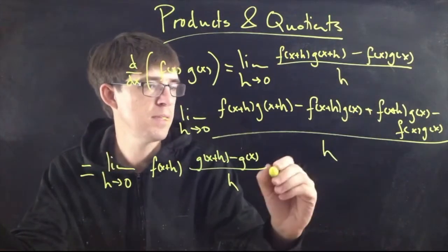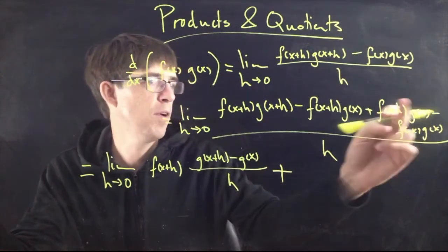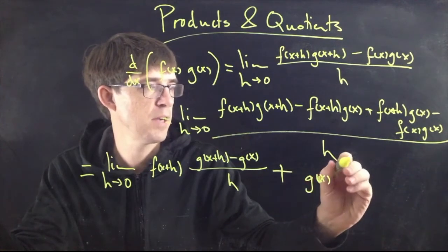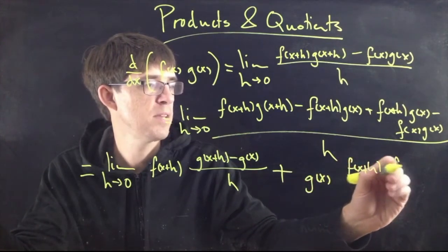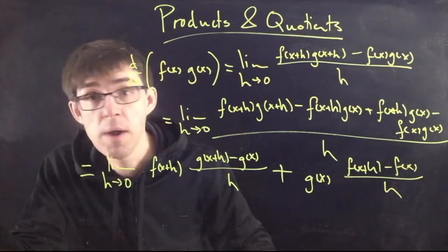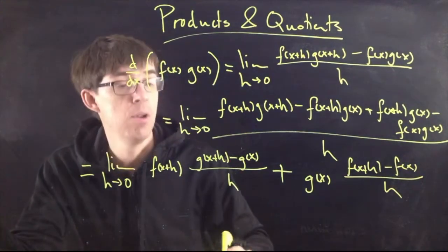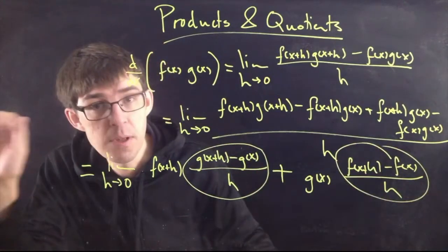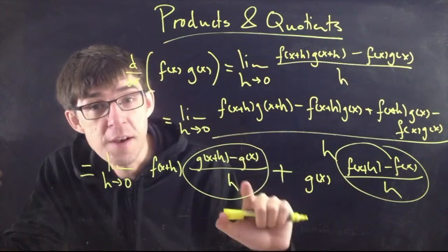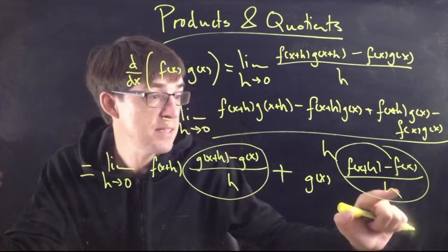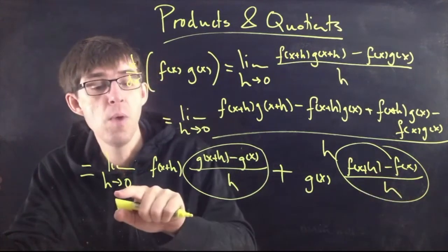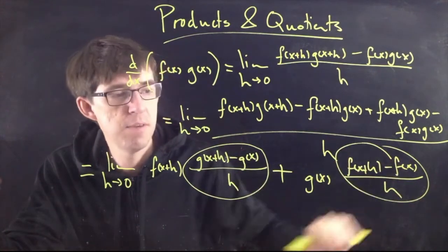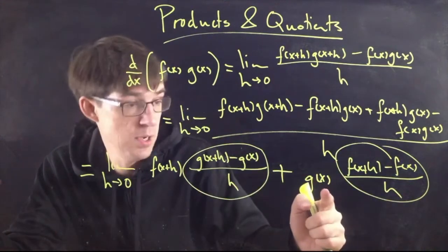Then we have plus the other fraction from the last two terms, factoring out g(x), giving g(x) times [f(x+h) − f(x)] over h. Now we can actually do the limit. These expressions should look familiar — [g(x+h)−g(x)]/h is the definition of the derivative of g, and [f(x+h)−f(x)]/h is the definition of the derivative of f.